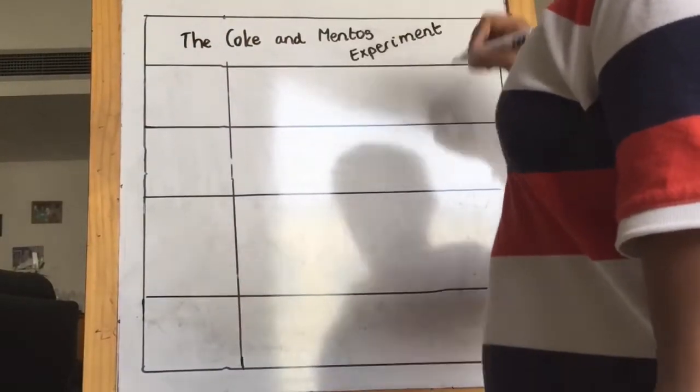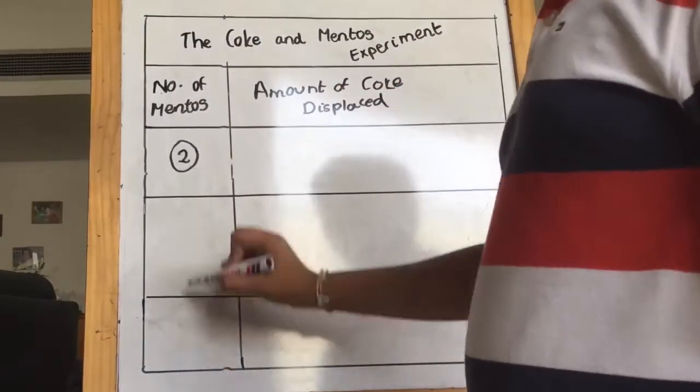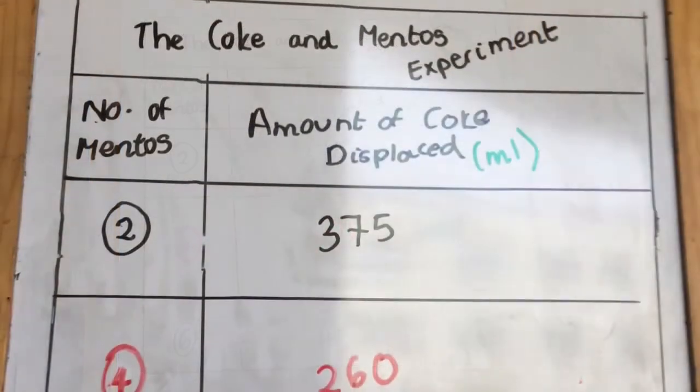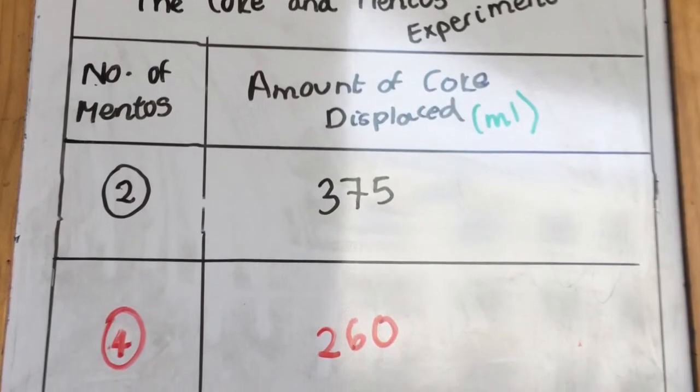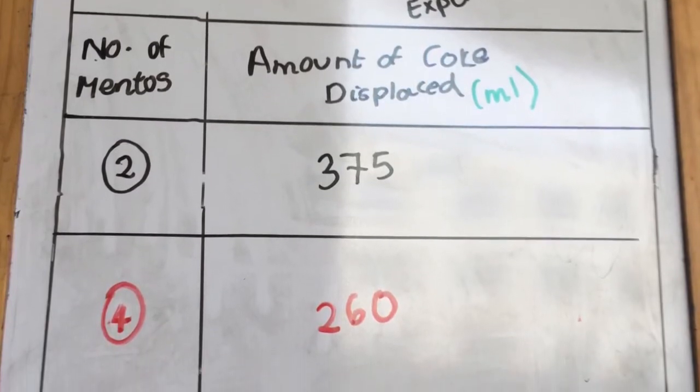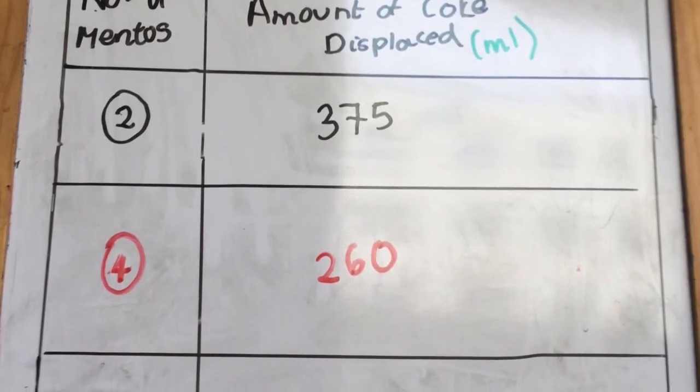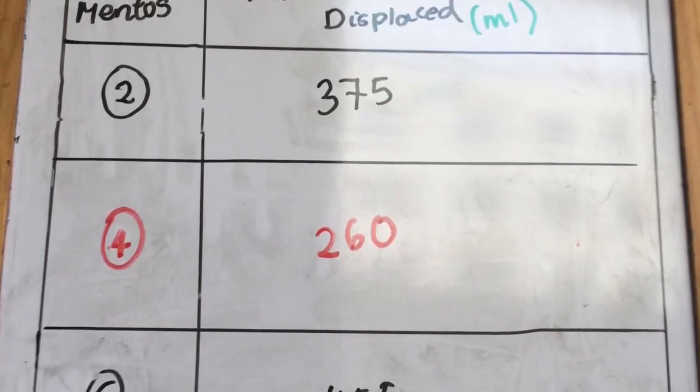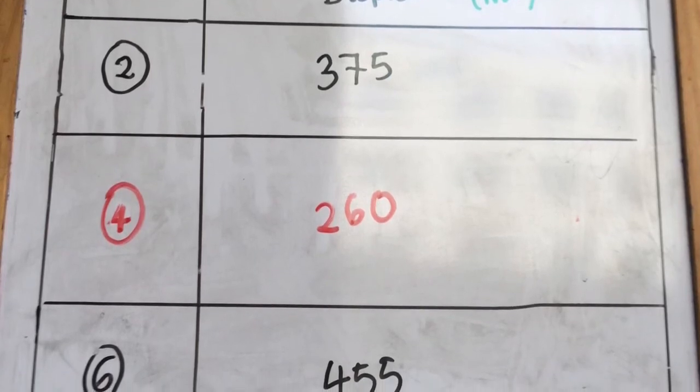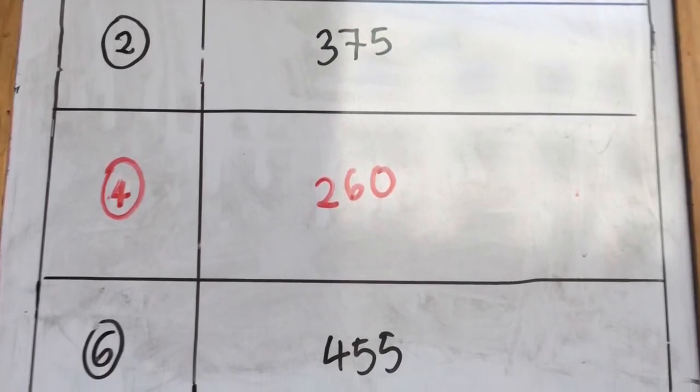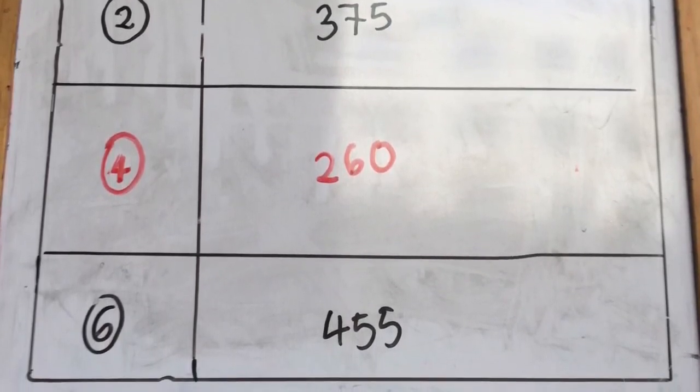To conclude, the more mentos you add, the larger the displacement will be. 2 mentos had 375 ml of displacement. 4 mentos had 260 ml of displacement. And 6 mentos had 455 ml of displacement. The 4 mentos didn't work as well because the gas escaped before the mentos were dropped in.